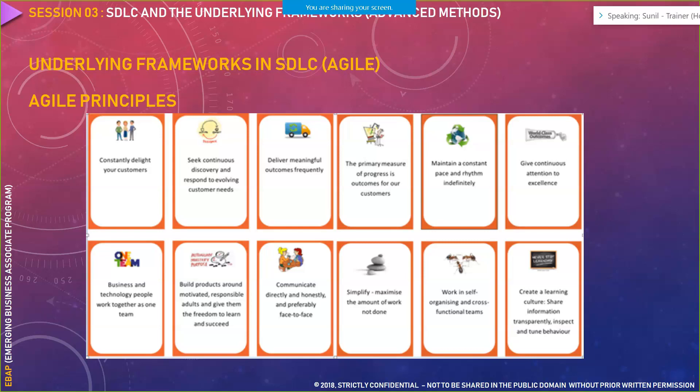Coming to the 12 Agile Principles — every framework has certain principles associated with it. The first is: constantly delight your customers. When working in an agile engagement and responding to customer changes, it ultimately delights your customer. Since you are accepting their inputs and requests pertaining to a particular implementation or observation, it essentially delights the customer.